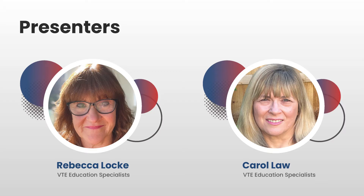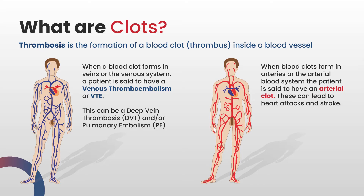We're going to start by discussing what clots are. Thrombosis is the formation of a blood clot, and we often refer to a blood clot as a thrombosis — they occur inside a blood vessel. Clots can form in the venous system or in the arterial system. When a blood clot forms in veins or the venous system, a patient is said to have a venous thromboembolism or VTE, which can be either a deep vein thrombosis, DVT, and/or a pulmonary embolism, PE.